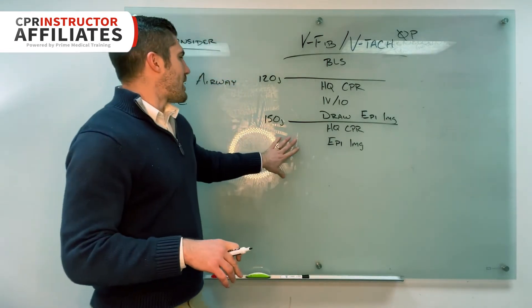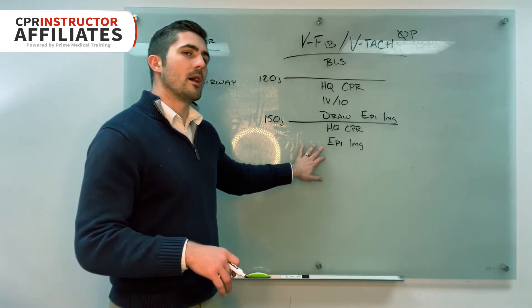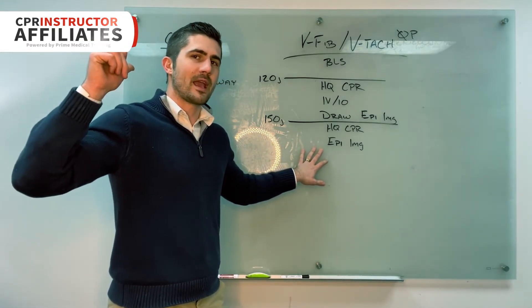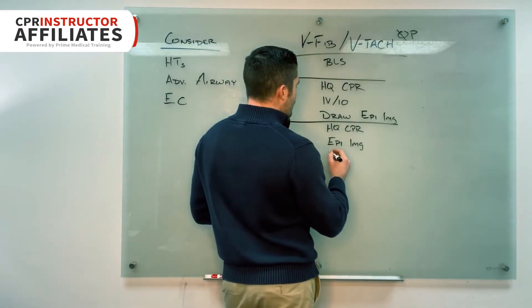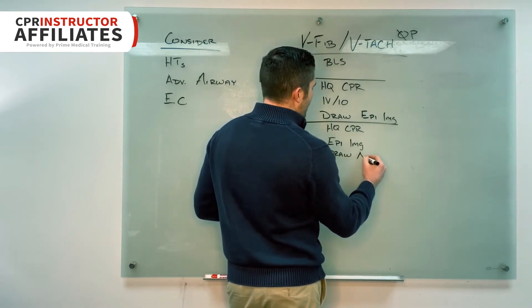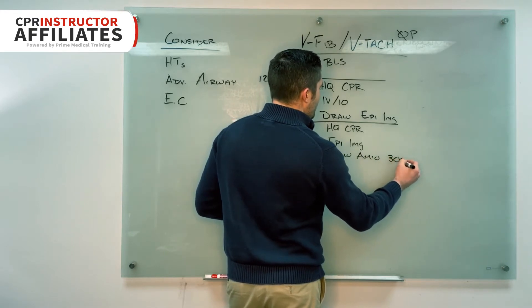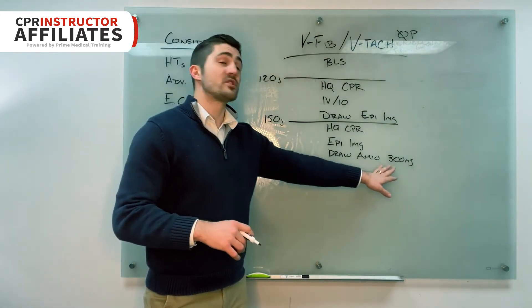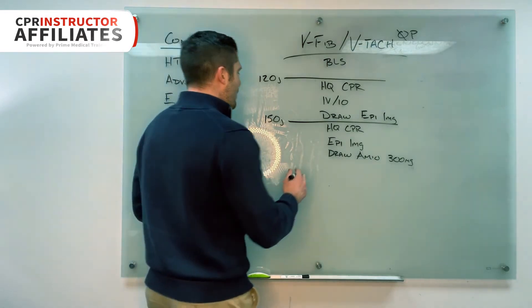But anyway, so we're in our second round here: shock, high quality CPR, epi. We've considered our things like H's and T's and whatnot. And then we need to talk about drawing another drug. So we're going to draw the next one and ask them what it's going to be. And they should tell me amiodarone, and it should be 300 milligrams. And I just point out to them, I say, look here, it's 300, not 150 like in the tachycardic algorithm. So bear that in mind.